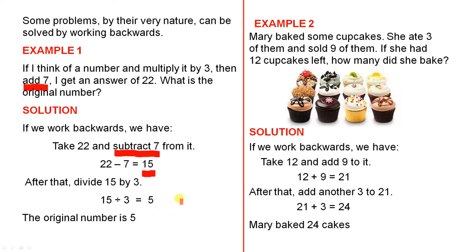Now let's quickly check the answer here to see if that is actually correct. So if I think of a number and multiply it by 3, 3 fives are 15. Then add 7. 15 plus 7 is 22. And that is correct. So the original number was 5, which is correct.